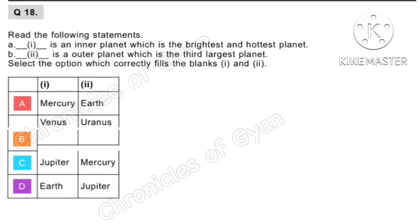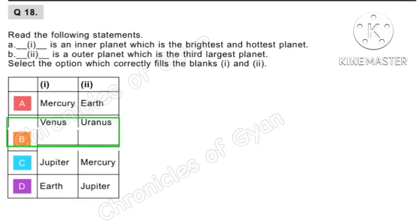Question 18. Read the following statements: A — blank 1 is an inner planet which is the brightest and hottest planet. B — blank 2 is an outer planet which is the third largest planet. Select the option which correctly fills blanks 1 and 2. For statement A, Venus is an inner planet which is the brightest and hottest planet. For statement B, Uranus is an outer planet which is the third largest planet, while the first largest planet is Jupiter. Correct option is option B.